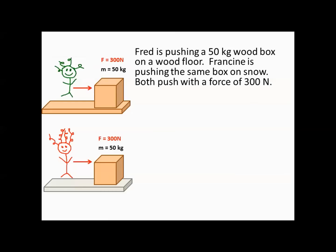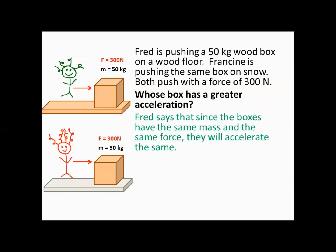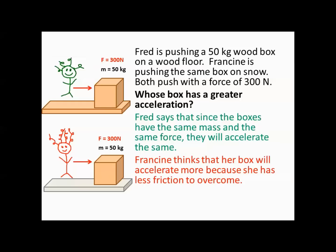Fred is pushing a 50 kilogram wood box on a wood floor. Francine is pushing the same box on snow. Both push with a force of 300 newtons. Whose box has a greater acceleration? Fred says since the boxes have the same mass and the same force, they will accelerate the same. Francine thinks that her box will accelerate more because she has less friction to overcome.